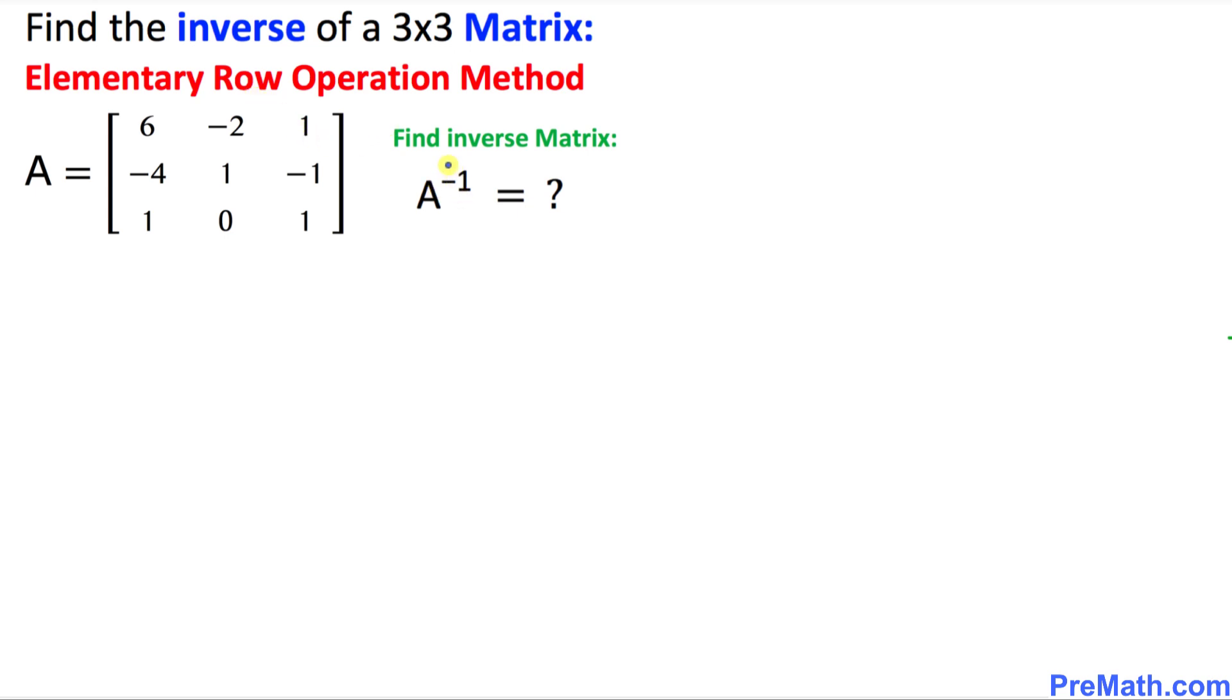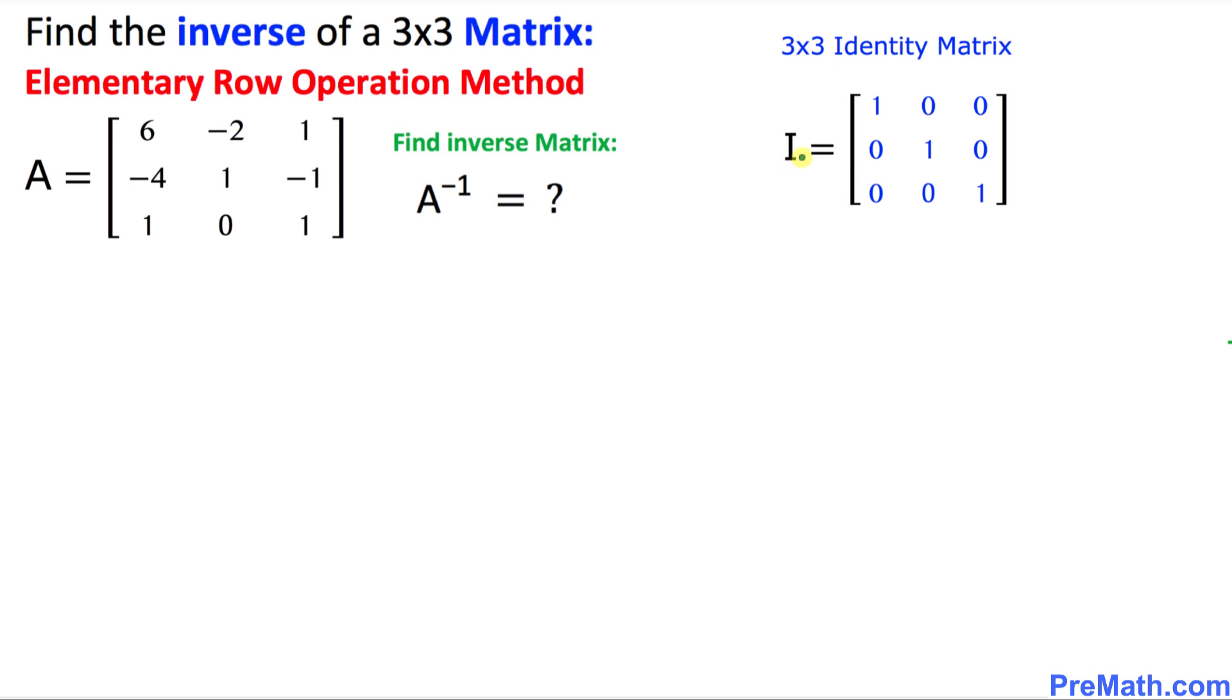The inverse of matrix A could also be written as A power negative 1. We have this identity matrix I with 3 rows and 3 columns. Remember that an identity matrix has all ones in the main diagonal and the rest of the entries are 0.